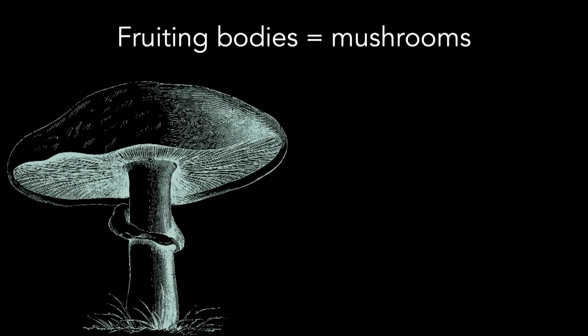So this is a mushroom, also known as a fruiting body. A fruiting body, like a fruit, is accurate because it produces seeds — spores — which act like seeds. But I want you to keep in mind that mushrooms or fungi belong to their own kingdom and they're not actually plants at all.